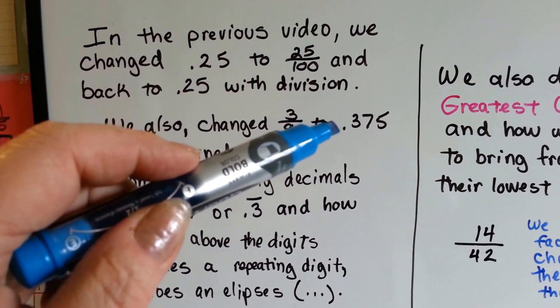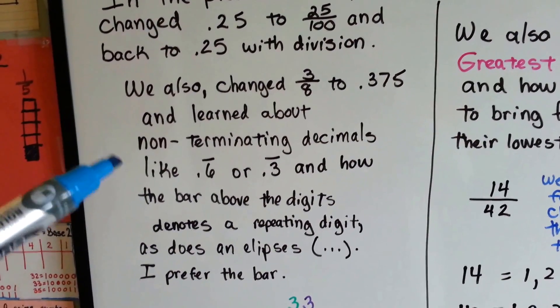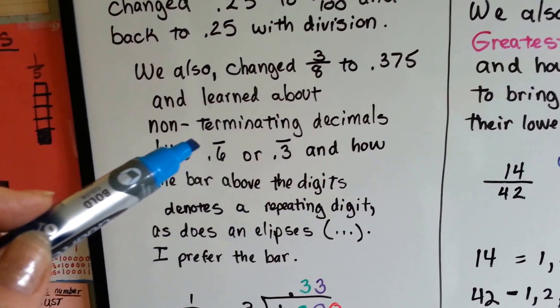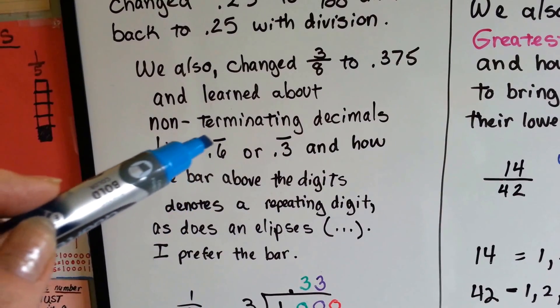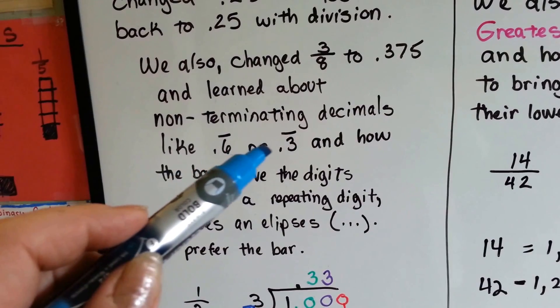We also changed 3/8 to .375, and we learned about non-terminating decimals like .6 or .3, and how the bar above the digits denotes a repeating digit, and an ellipsis, dot dot dot, can also mean that the digits repeat.